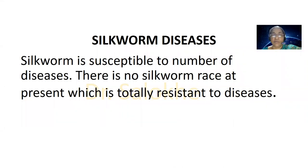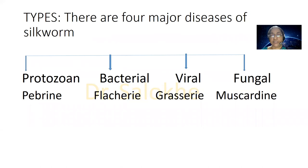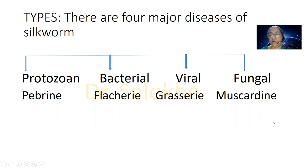Hello everybody. We will study silkworm diseases. There are various species of the silkworm, of which four important species are Mulberry silkworm, Erie silkworm, Muga silkworm, and Tusser silkworm. But there is no silkworm race or species at present which is totally resistant to diseases. Silkworm is susceptible to a number of diseases. These diseases are of four major types depending upon the pathogen. If the pathogen is protozoan, then it is called pebrine disease. Bacterial pathogen will cause flachery, viral will cause grassary, and fungal will cause muscadine disease.